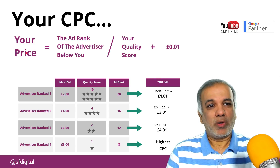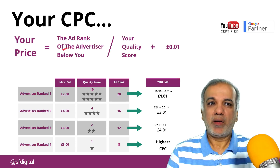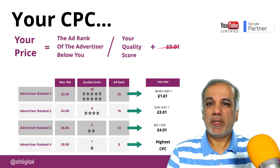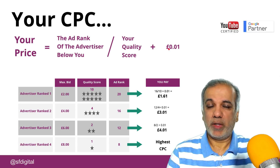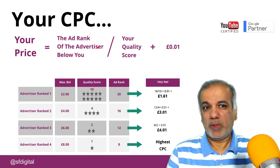So your price is equal to the ad rank of the advertiser below you, divided by your quality score, plus one penny. I'm talking here in British pounds, but it could be any currency where you are. So let's look at this formula a bit more closely and how it works.